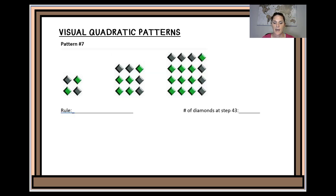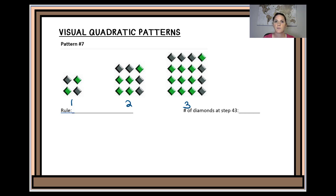Okay, let's take a look at our pattern here. I'm going to go ahead and write down our position number: position 1, position 2, and position 3. We have to look at each of the dimensions — the length and the width — and we have to try to determine how does that dimension relate to the position number. If I look at the bottom, the length, I can see that I have a 2 and then a 3 and then a 4 as I progress through the position numbers.